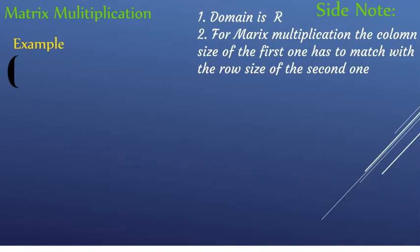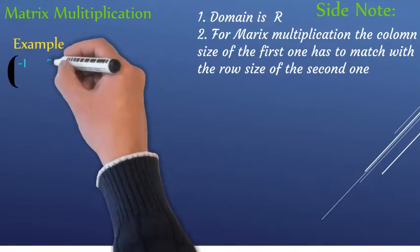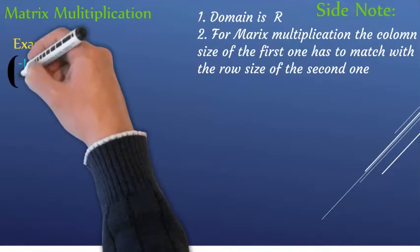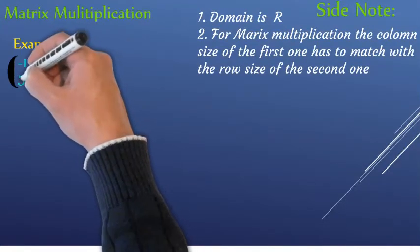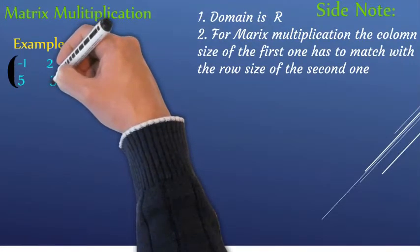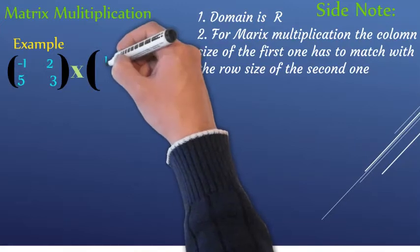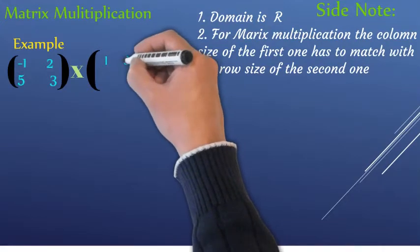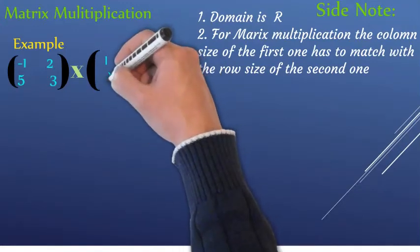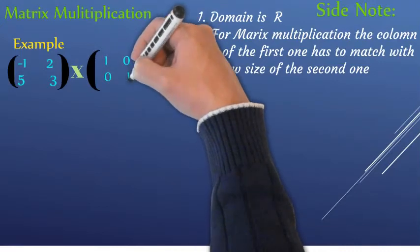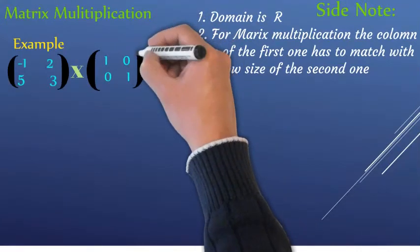Let's say we have the matrix: minus one, two, five, three. Notice this is a square matrix — two by two. For a square matrix, the identity always has ones on the diagonal line. You will notice the ones are on the diagonal of the square. The identity matrix for a two-by-two has ones on the diagonal and zeros elsewhere.